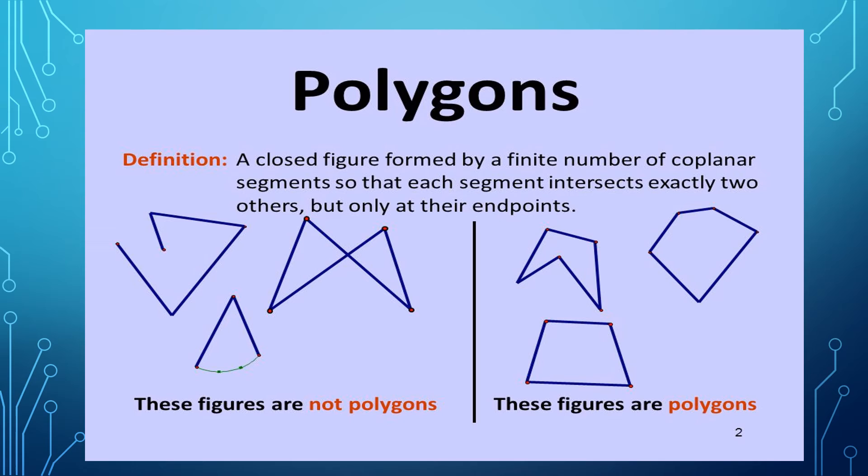A polygon is a closed figure formed by a finite number of coplanar segments so that each segment intersects exactly two others but only at their endpoints. The first figures are not polygons, and the other figures are polygons. They are closed figures but only at their endpoints.